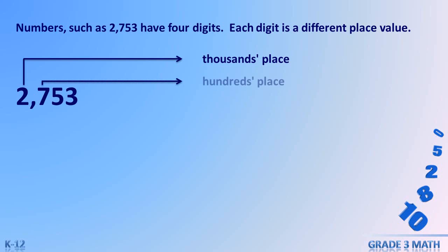The next digit is the hundreds place. It tells you how many sets of 100 are in the number. The number 2753 has seven hundreds. The next digit is the tens place — it tells how many sets of tens are in the number. We have five tens in this example.